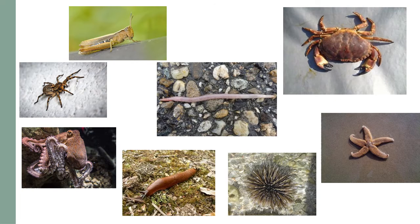Arthropods like insects and spiders have exoskeletons. Crustaceans like the crab also have exoskeletons and are often found in damp habitats. All of these animals belong to the invertebrate group — they do not have internal backbones.